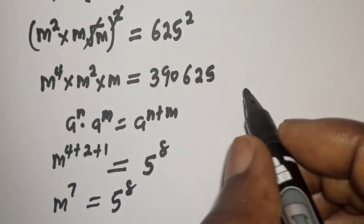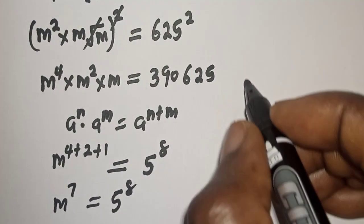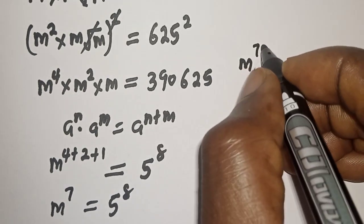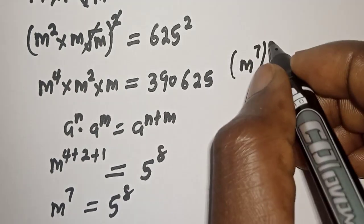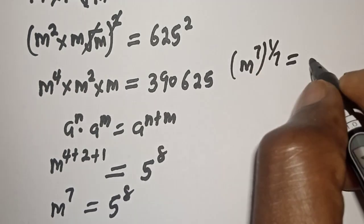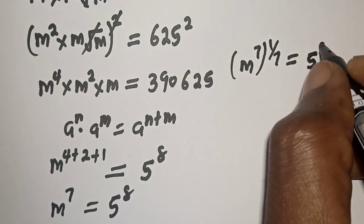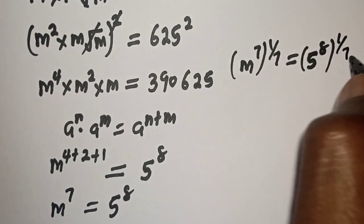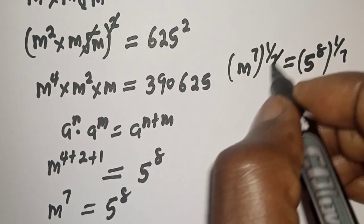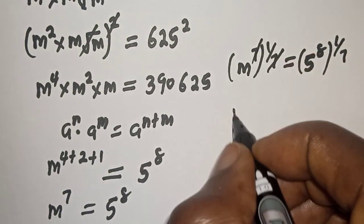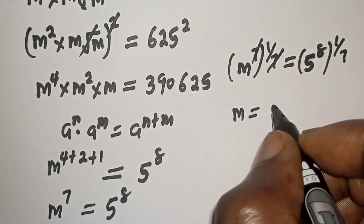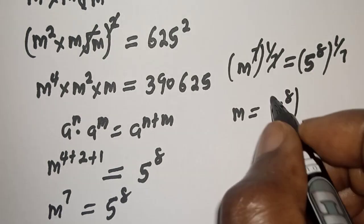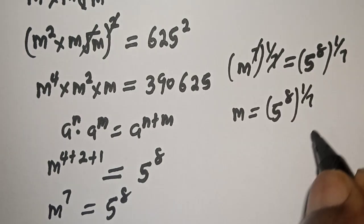Let's multiply the exponents of both sides by 1 over 7. That is m raised to power 7 multiplied by 1 over 7 is equal to 5 raised to power 8 multiplied by 1 over 7. So this cancels, and m is equal to 5 raised to power 8 multiplied by 1 over 7.